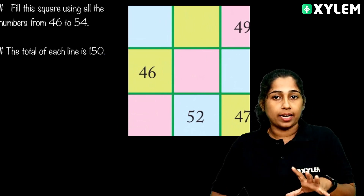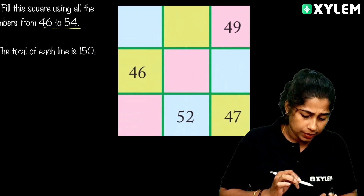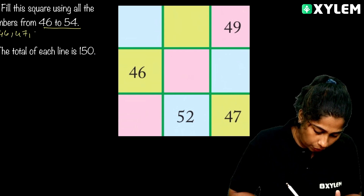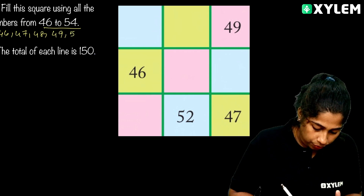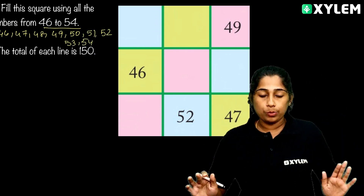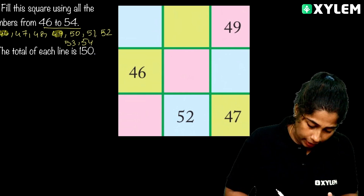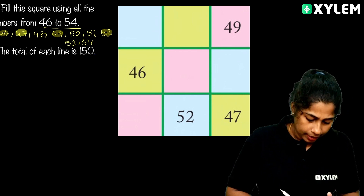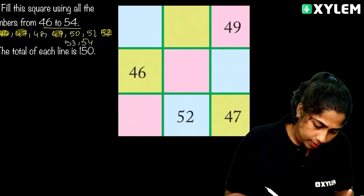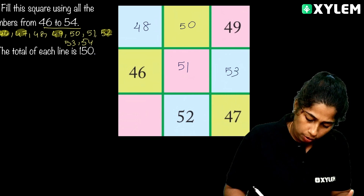Now we will fill a magic square using the numbers from 46 to 54 — that is, 46, 47, 48, 49, 50, 51, 52, 53, and 54. We can fill the numbers here. How do we fill them?